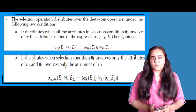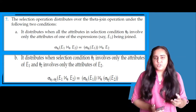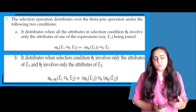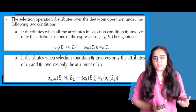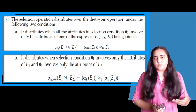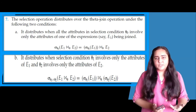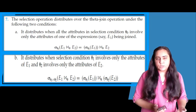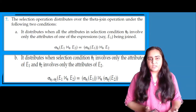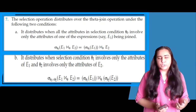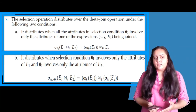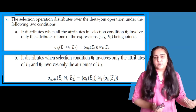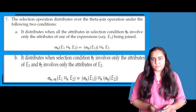Rule 7b says it also distributes when theta 1 involves only the attributes of E1 and theta 2 involves only the attributes of E2. On the left-hand side, sigma of theta 1 AND theta 2 is applied to the theta join of E1 and E2. This converts to sigma theta 1 of E1, theta-joined by applying theta 2 to E2, since theta 1 contains columns of E1 only and theta 2 contains columns of E2 only.